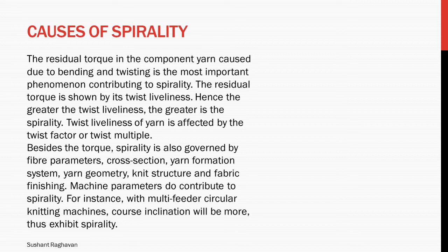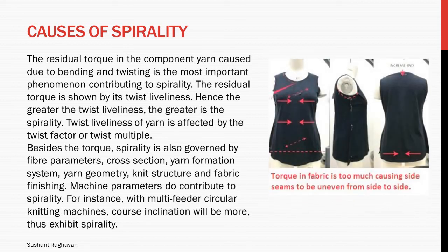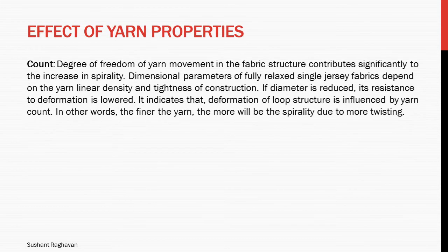Machine parameters also contribute to spirality. For instance, with multi-feeder circular knitting machines, course inclination will be more, thus exhibiting more spirality. A knitted garment where torque in the fabric is too much will cause the side seam to be uneven from side to side. The alignment in the fabric structure contributes significantly to the increase in spirality.